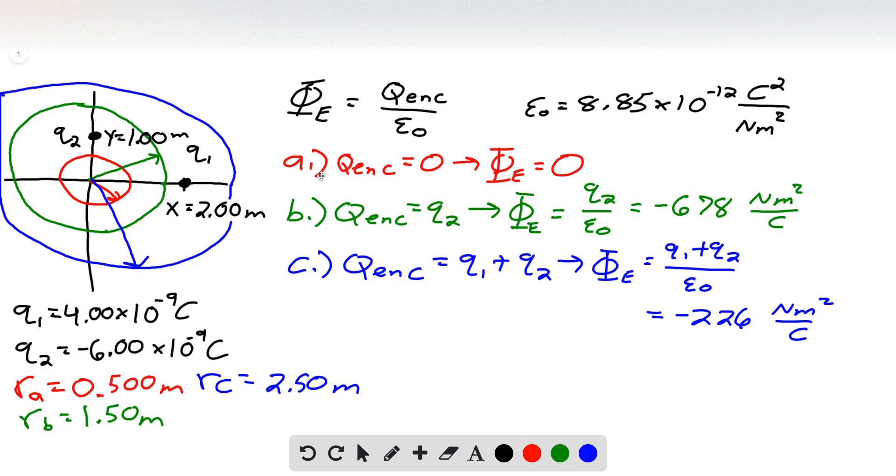The first one in part A, well, we look at that surface, and because it only goes out to 0.50 meters, it doesn't include any of the charges, because Q1 is out at 2 meters away and Q2 is at 1 meter away. So nothing is enclosed in this surface, so the total enclosed charge is 0. Therefore the net electric flux through the surface in part A is just 0. There is no flux through that surface.